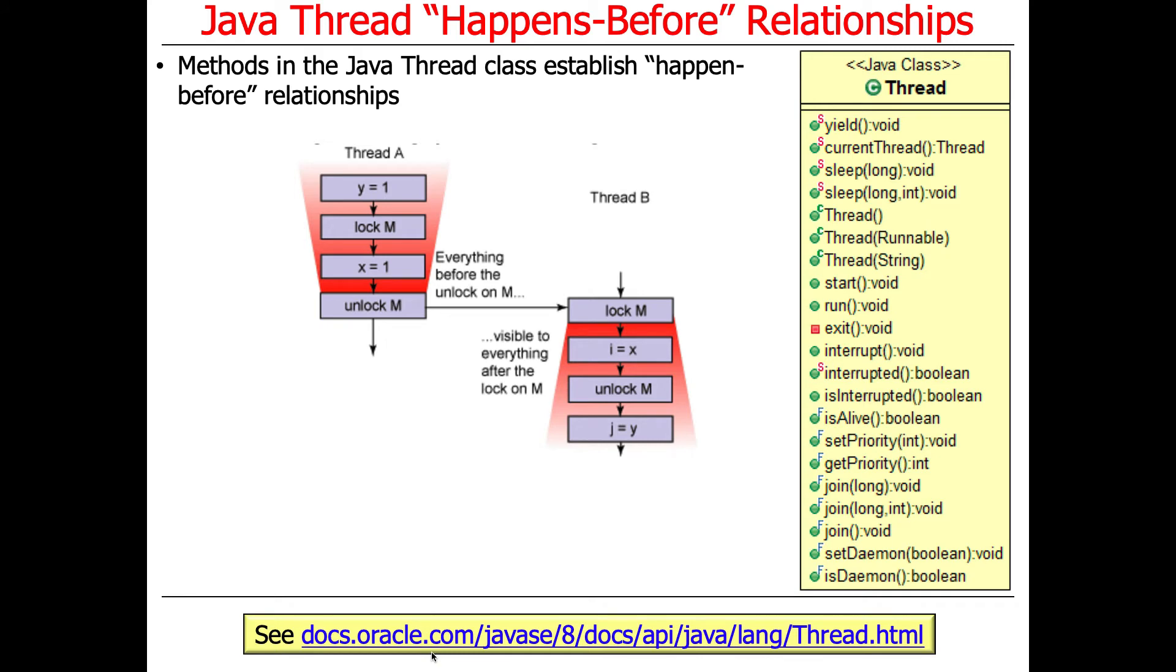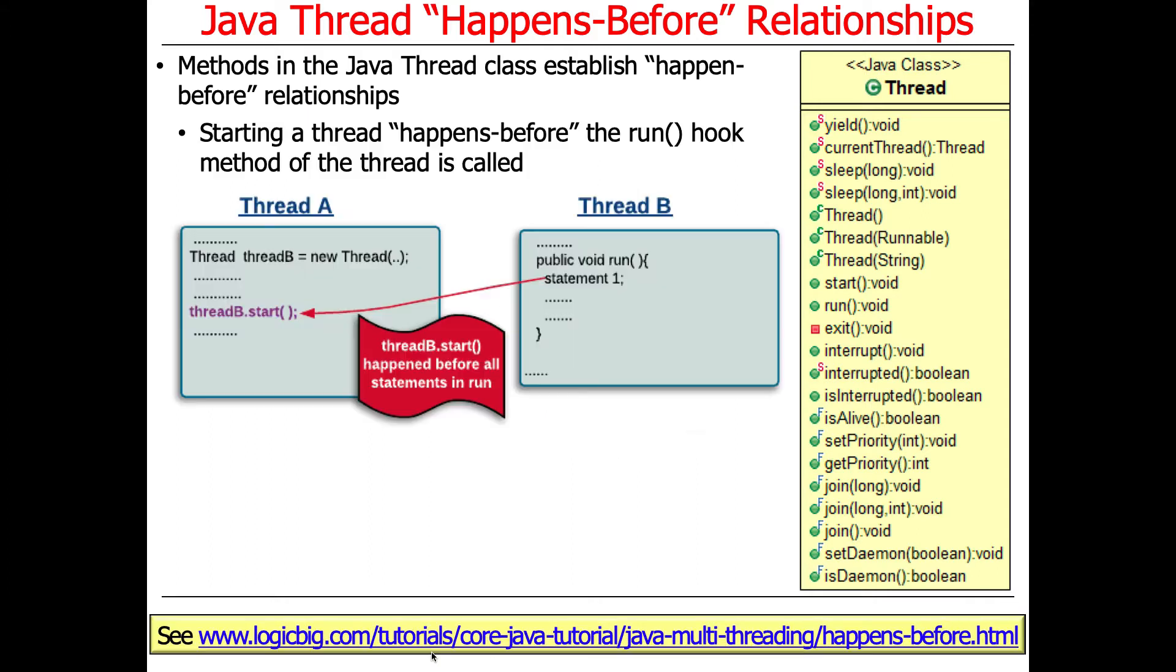As you probably remember, Java threads have a whole bunch of methods, and some of these methods will establish happens-before relationships, and we'll take a look at some examples here.